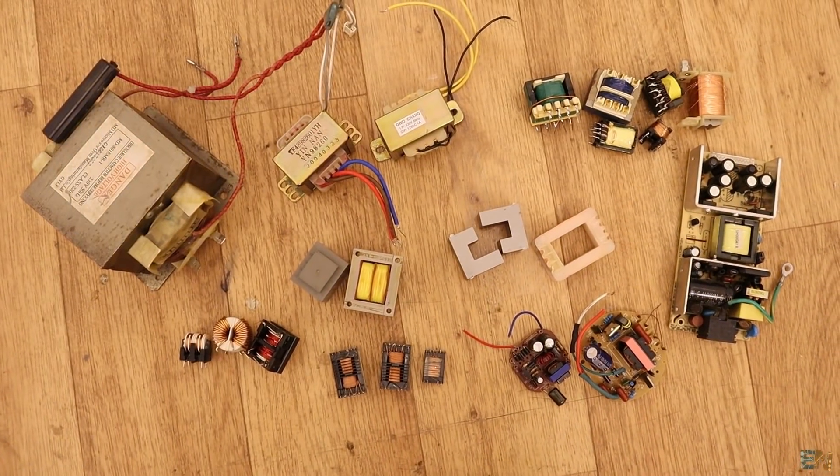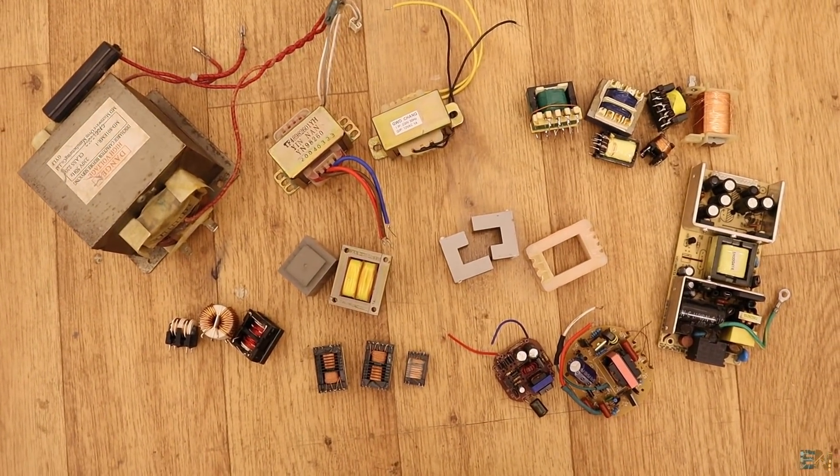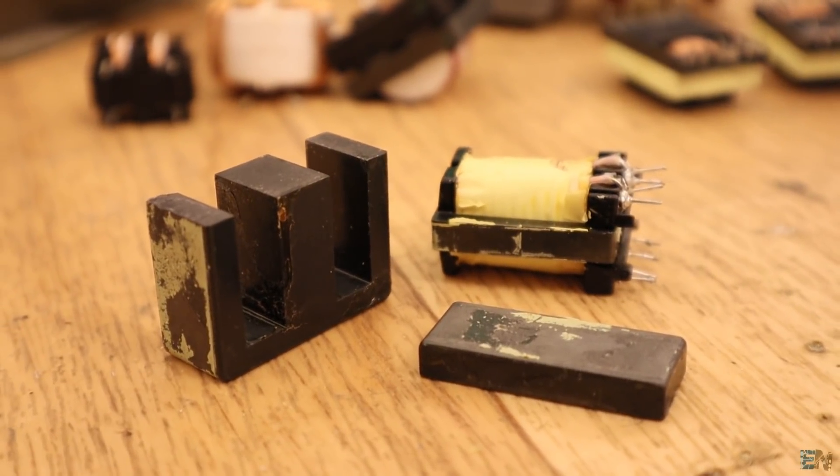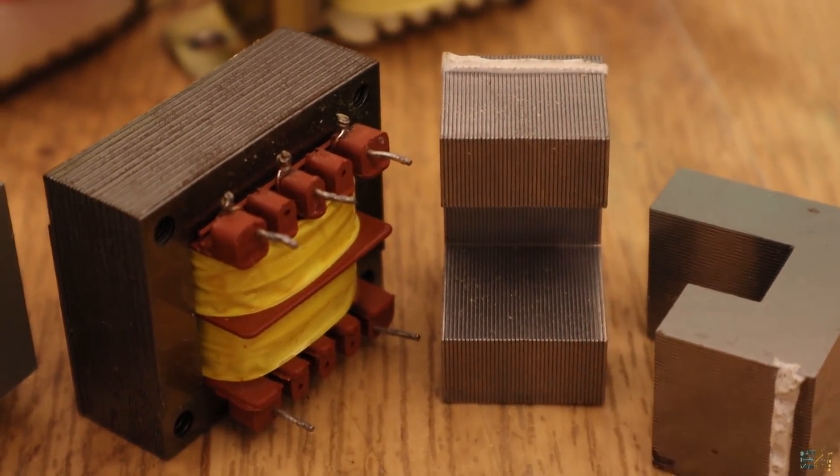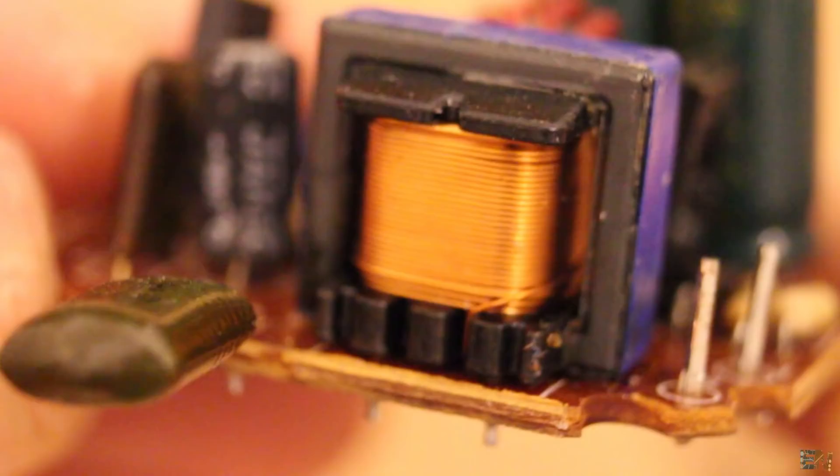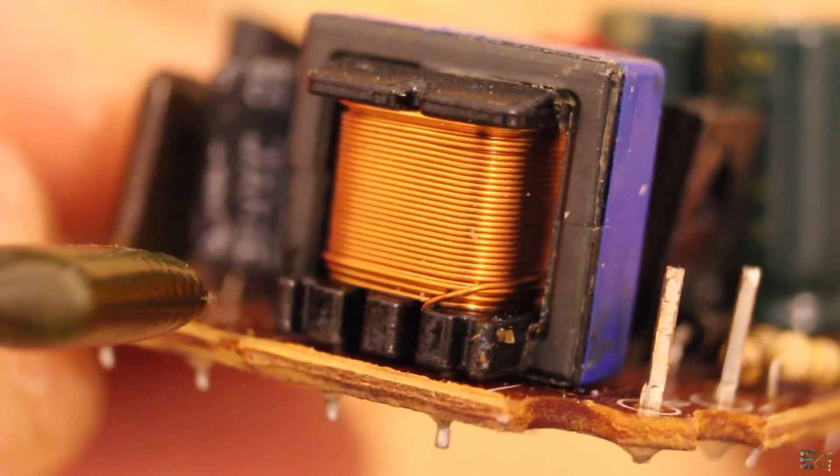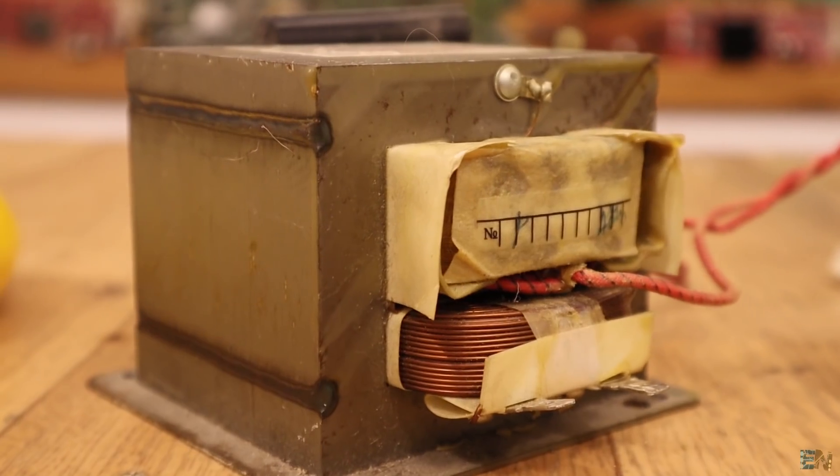What's up my friends, welcome back. So here I have a lot of transformers. Some of these have a ferrite core, others are made out of an iron core, some are very small with just a few windings and some are huge with thousands of windings and very high voltage output.